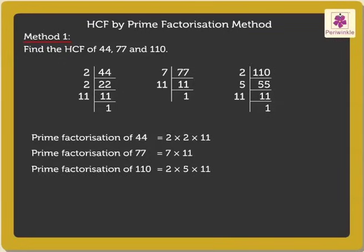Next, circle the Common Prime Factors of 44, 77, and 110. Here, the Common Factor is only 11. Since there is only one Common Factor here, the HCF of these numbers is also the same, i.e. 11.